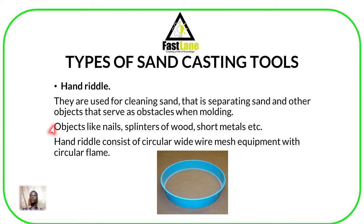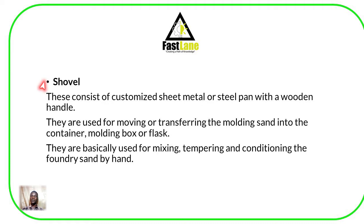A hand riddle consists of a circular wide wire mesh with a circular frame, as you can see. Then we have another tool known as the shovel — what you commonly refer to as a spade. It consists of a customized sheet metal or steel pan with a wooden handle. In foundry technology, we refer to it as a shovel.